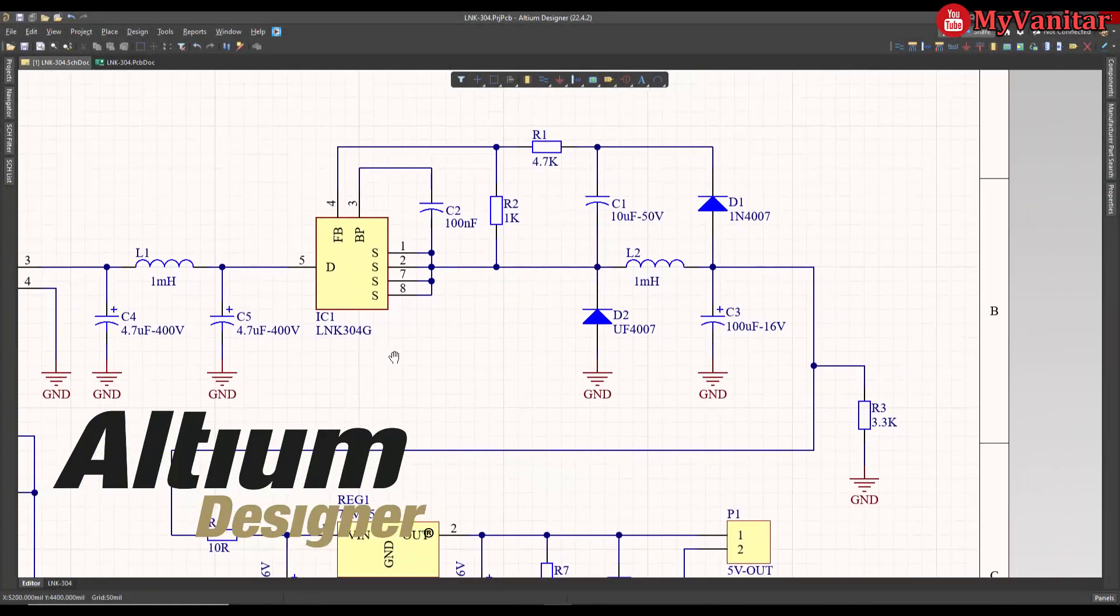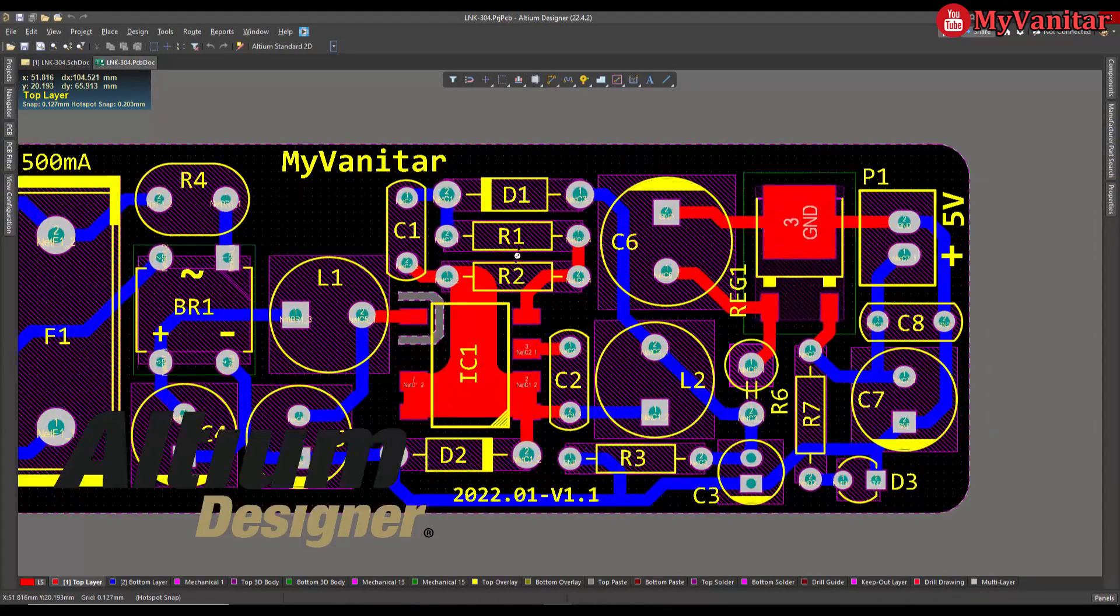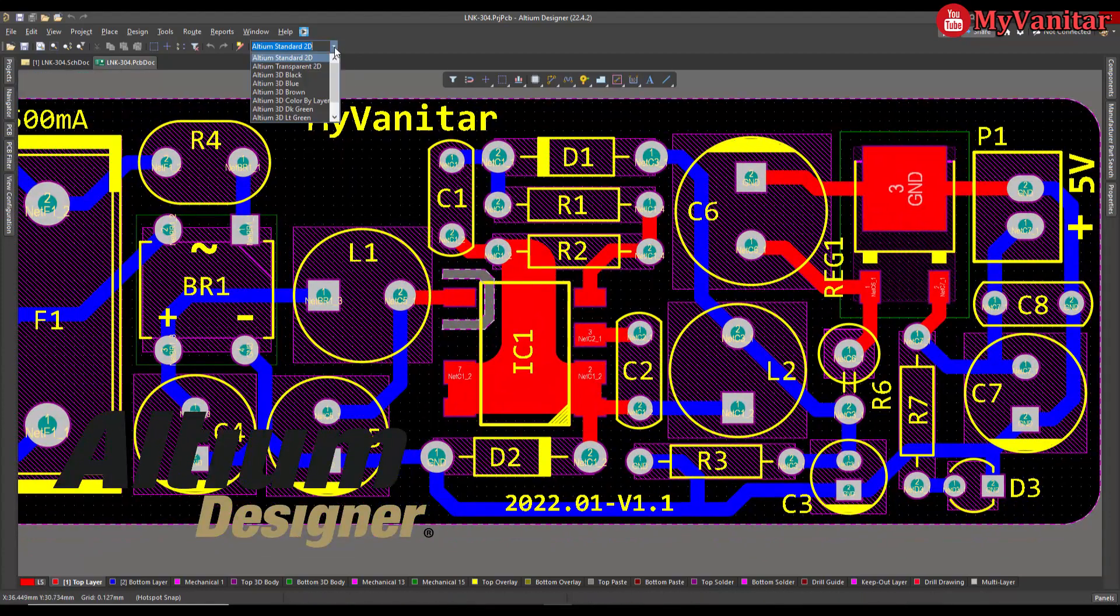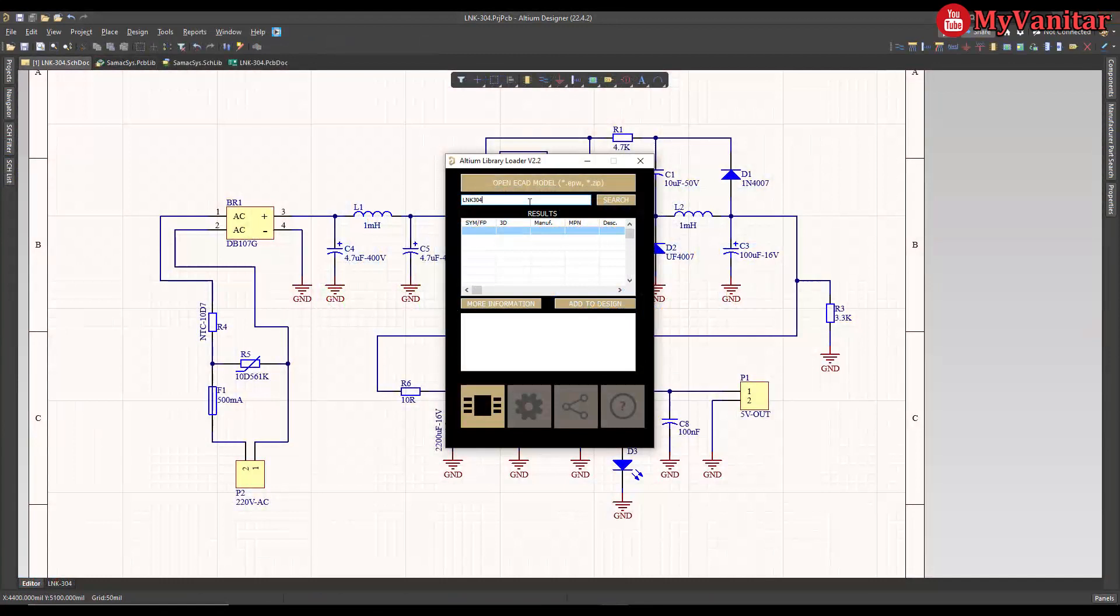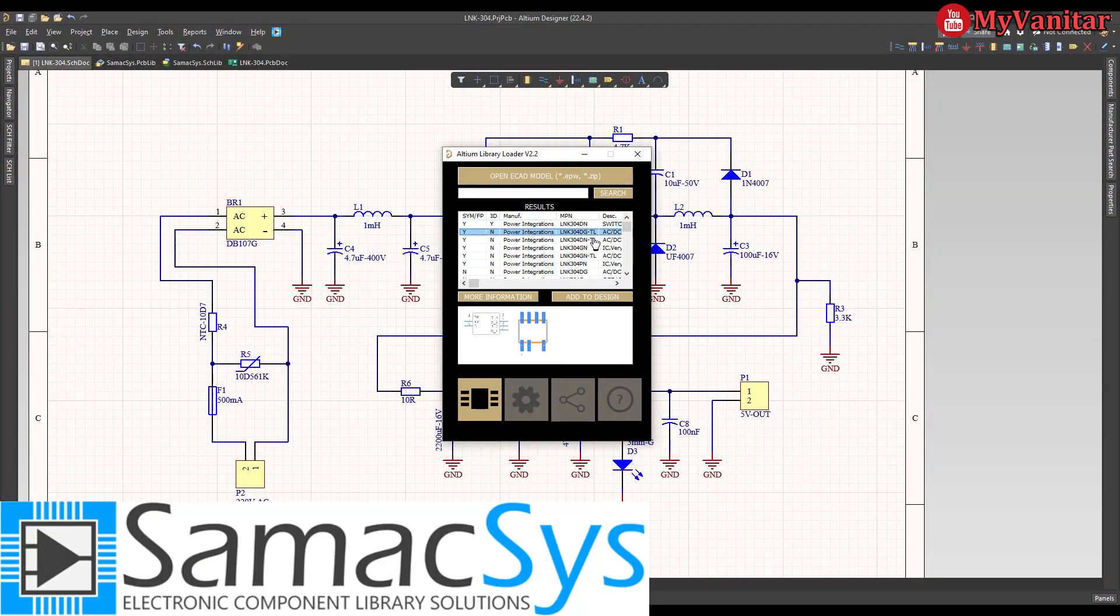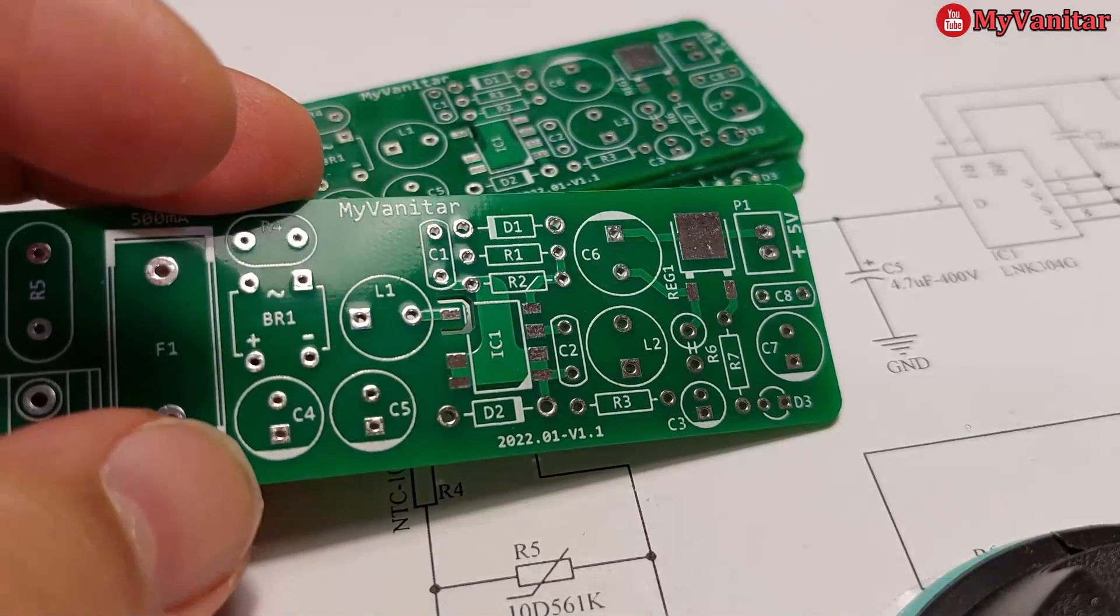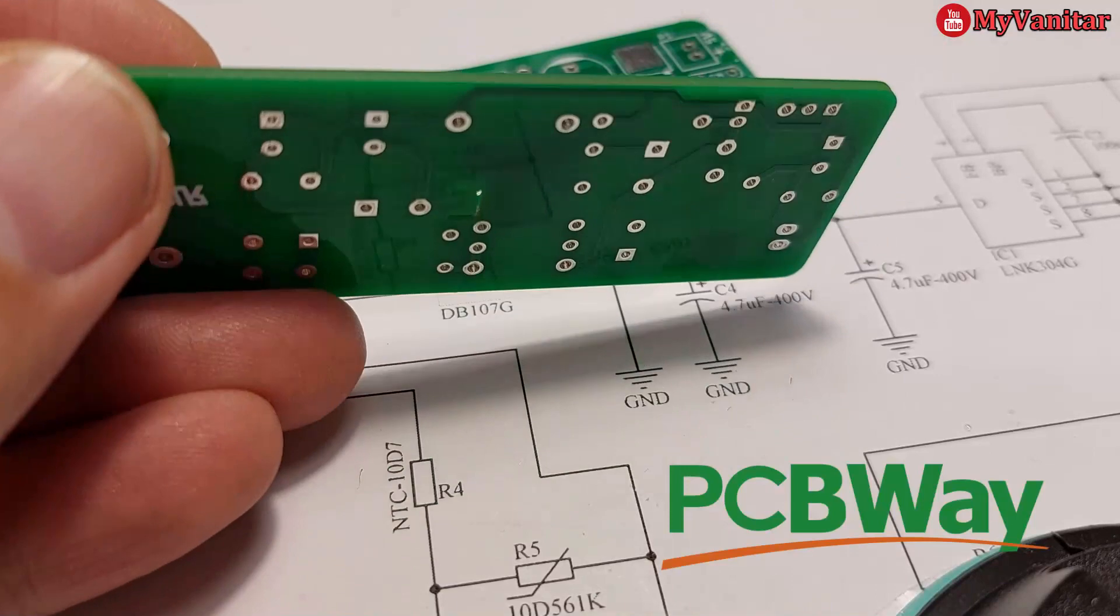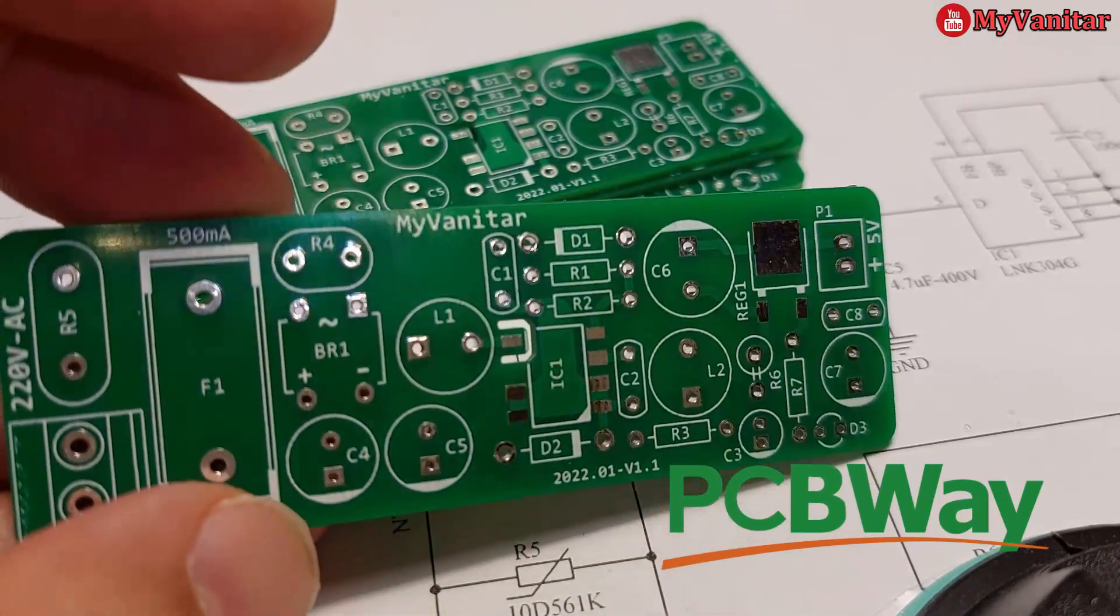To design the schematic and PCB, I used Altium Designer 22. To find and install missing component libraries, I used the Simaxis Altium plugin. To get high-quality fabricated boards, I sent the gerbers to PCBway.